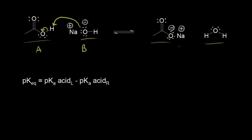Now let's think about the reverse reaction. The acetate anion would function as a base and take this proton on water, leaving these electrons behind. That would give us back acetic acid and hydroxide. So for the reverse reaction, the acetate anion is functioning as a base, and water is functioning as an acid, donating a proton.